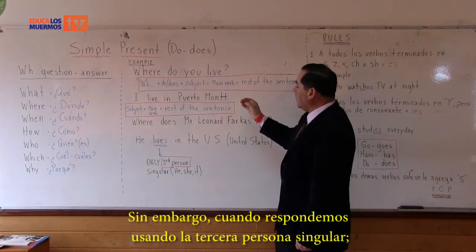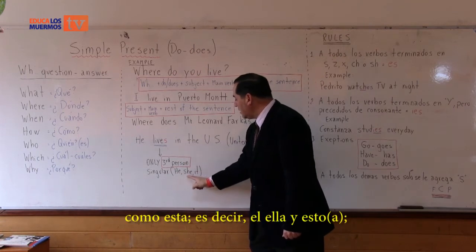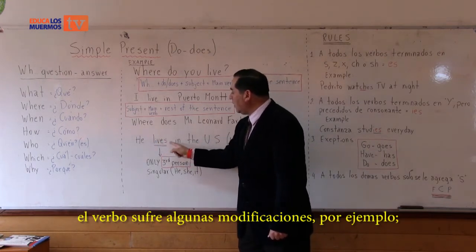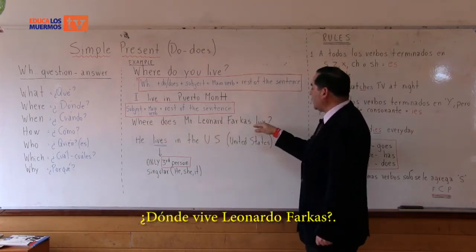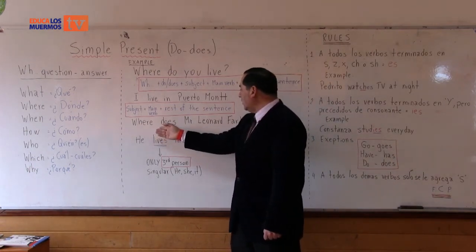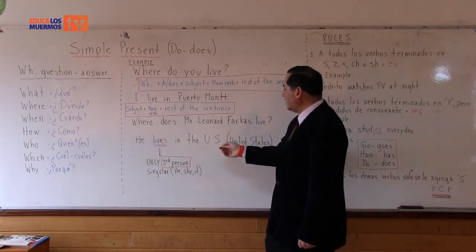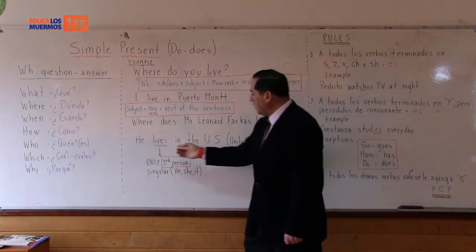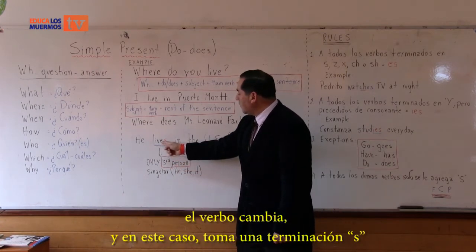However, when we answer with the third person singular — that is to say, he, she, and it — the verb suffers some modifications. For example: 'Where does Mr. Leonardo Farcas live?' — which means dónde vive Leonardo Farcas? 'He lives in the U.S.' — él vive en los Estados Unidos, the United States. As he is third person singular, the verb changes, and in this case it takes an S ending.